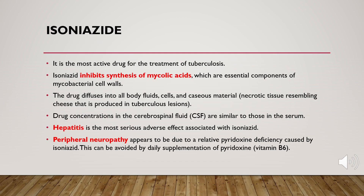The first agent in the anti-tuberculosis drug group is isoniazid — the most active, most common, widely used, and most effective. It kills mycobacteria through inhibition of the synthesis of mycolic acid, which is important for mycobacterial cell walls.